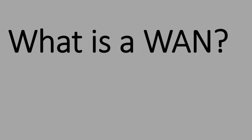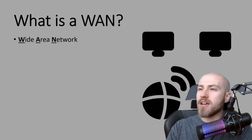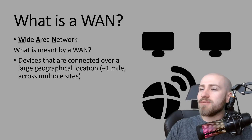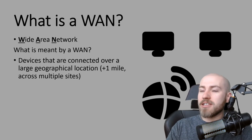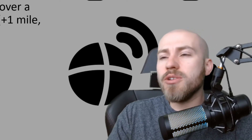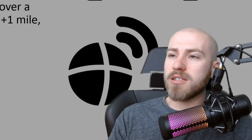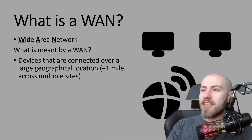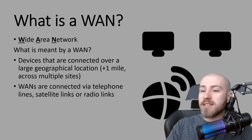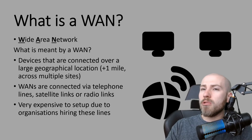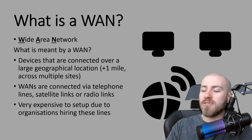The other type of network is a WAN, which stands for wide area network or sometimes wider area network. It is defined as devices connected over a large geographical location — over one mile and across multiple sites. It could be a huge business with sites in different parts of a country or worldwide. They are linked through satellite links, radio links, or telephone lines. Because the company won't own telephone lines, they will have to hire these lines, and that is a huge cost when setting up a WAN.